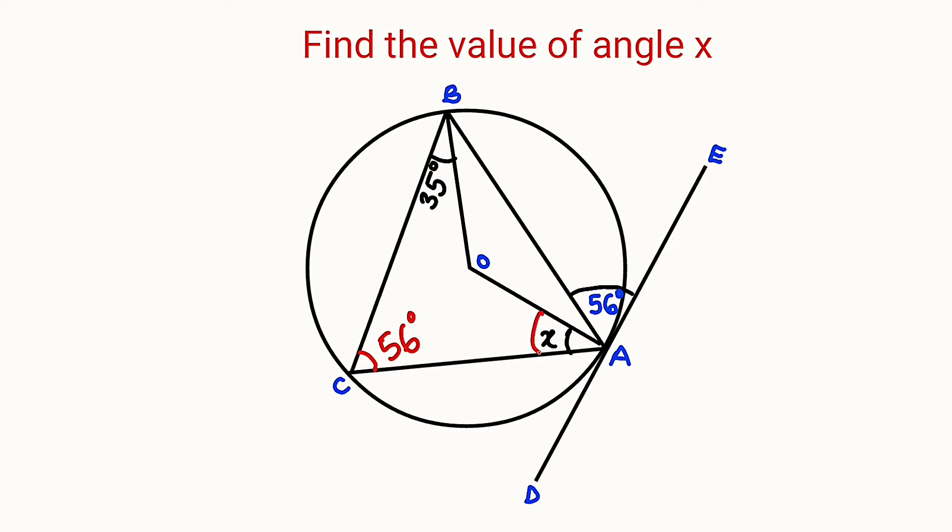Our main target is to find the angle x. But without writing this angle 56, I can form another angle from the center to that point C. I have just formed an isosceles triangle. You can see it here, BOC.